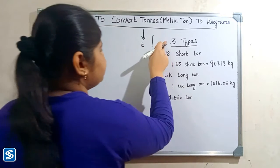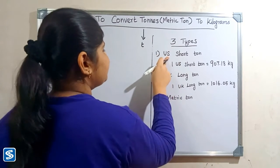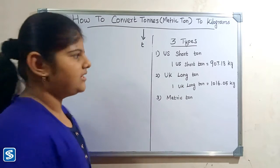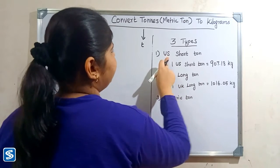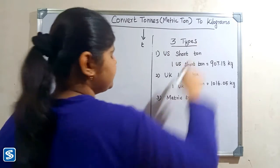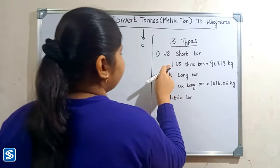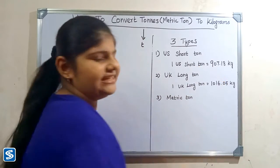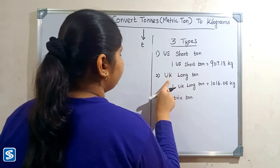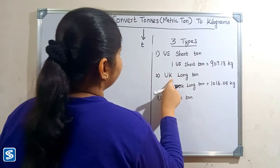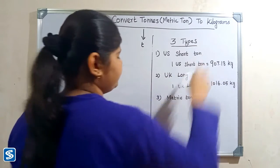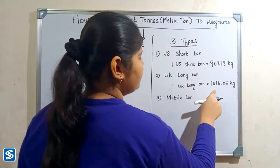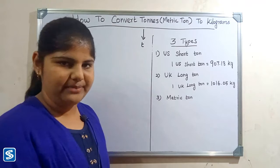There are three types of tons: US short ton, UK long ton, and metric ton. To convert US short ton into kilograms we use the formula: one US short ton is equal to 907.18 kilograms. To convert UK long ton into kilograms we use the formula: one UK long ton is equal to 1016.05 kilograms.